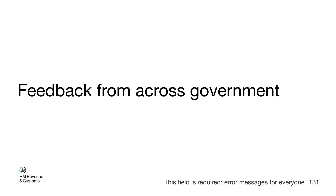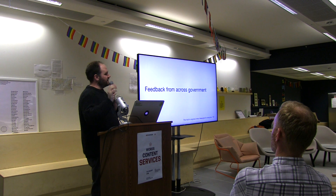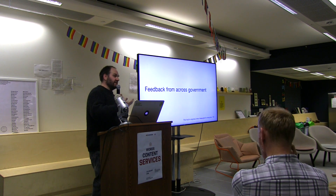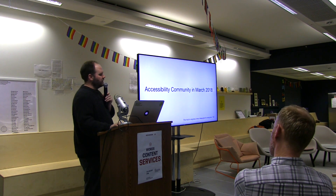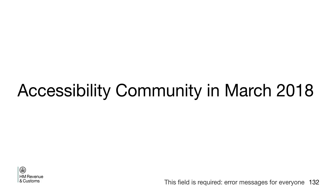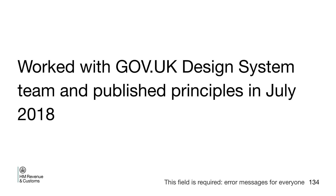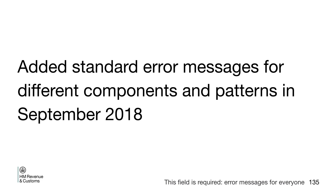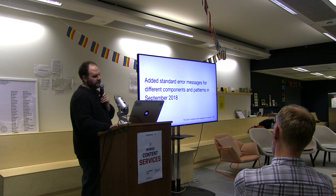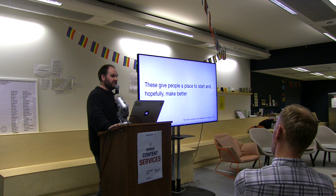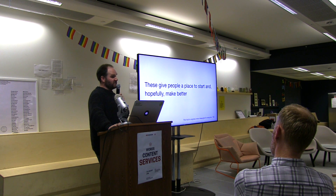November 2017 to now: we got feedback from the people I shared the document with — especially from Amy Hupe in the design system team and Adam Silver at Her Majesty's Courts and Tribunal Service, who gave a lot of feedback about the errors. We also did a lot of talking and aligning things together. I spoke with the accessibility community in March 2018 — that went down well. Did all the updates based on feedback, got them published, published some standard error messages, and added more in December. These are to give people a start and hopefully make things better — this is just a place to start.